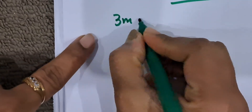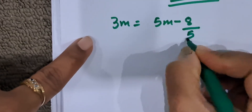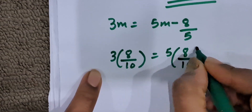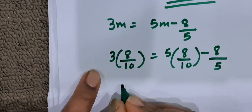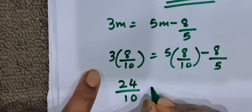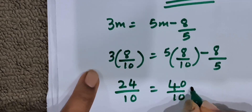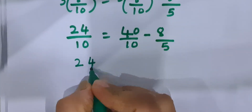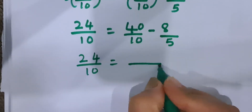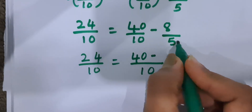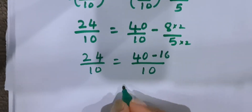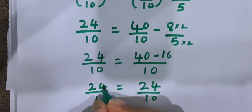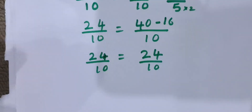The question is 3m is equal to 5m minus 8 by 5. 3 into 8 by 10 is equal to 5 into 8 by 10 minus 8 by 5. So, 24 by 10 on the LHS. On the RHS, LCM is 10. 5 twos are 10, 8 twos are 16. So, 40 minus 16 is 24, giving 24 by 10. LHS is also 24 by 10. Both LHS and RHS are equal. We have checked the results for the 10th one.